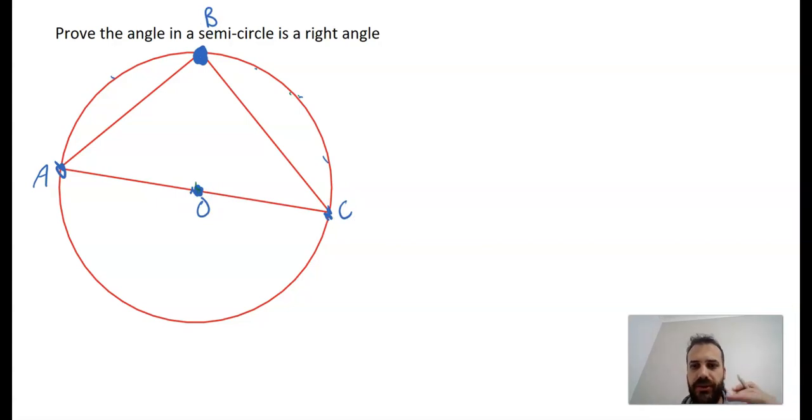And I'm going to do something called a construction. So I'm going to draw a line from B to O. Constructions in proofs are really really useful. And I'm going to write that as I'm doing it. All right, so I've constructed a line BO. Now this is a circle and this is the center.